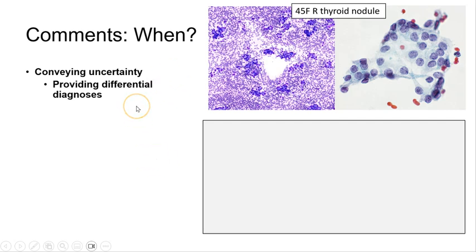And here is another example in conveying uncertainty. In a case where there are several potential differential diagnoses, a 45-year-old lady with a right thyroid nodule, we can see clearly microfollicular formations. However, the nuclei do show some atypical features with enlargement, dispersed chromatin, nuclear grooves, and oval nuclei.